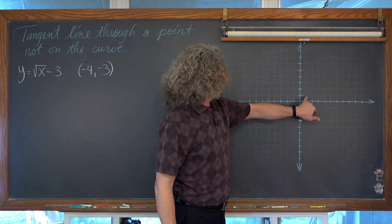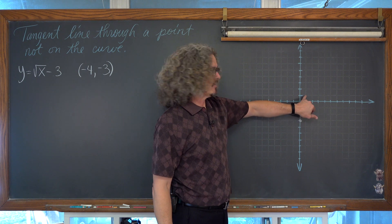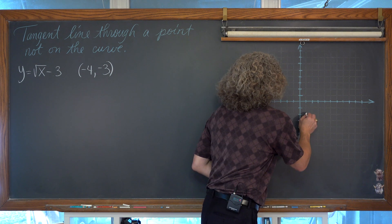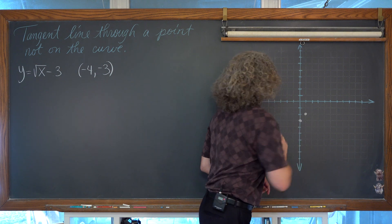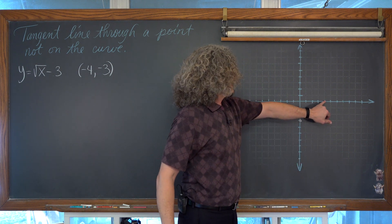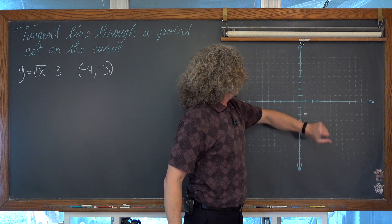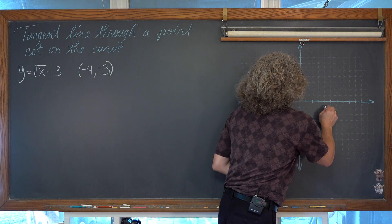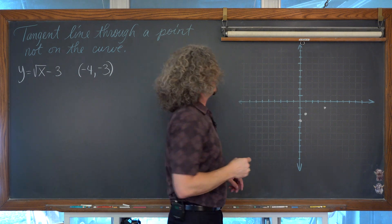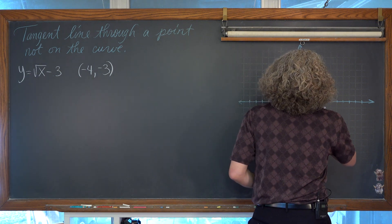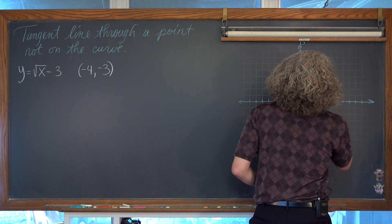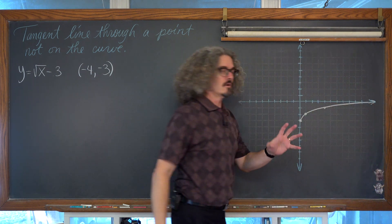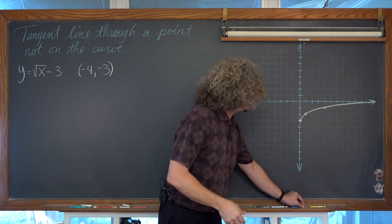The square root of 1 is 1, but instead of having a point at (1, 1), we are going to have that point at (1, -2), because we are shifting everything down 3 units. And the square root of 4 is 2, so instead of at (4, 2), we are going to be at (4, -1), and so on. Hopefully in calculus you can understand the ideas of transformations and know what common parent functions look like.